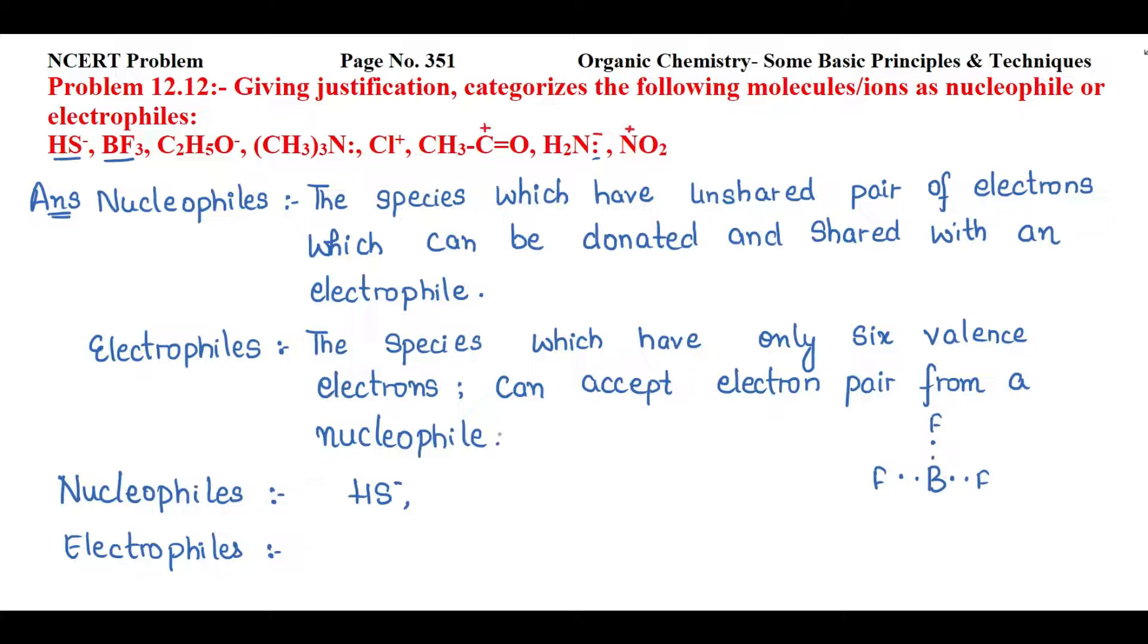Ab next dekhti hai C2H5O negative, negative charge aa raha ispe so isi liye ye nucleophile aega. Ab next agar aap dekho to yahan pe humare paas nitrogen pe ek unshared pair of electron mention hai.